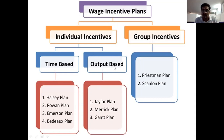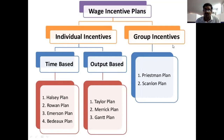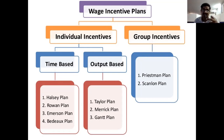In individual incentives — time-based or output-based — these seven plans are used for giving extra payment to each individual worker. In group incentives, the extra payment is given to the whole team or group based upon team or group efficiencies and performances. For group extra payment, we have two plans: Priestman plan and Scanlon plan. We will go through them one by one.